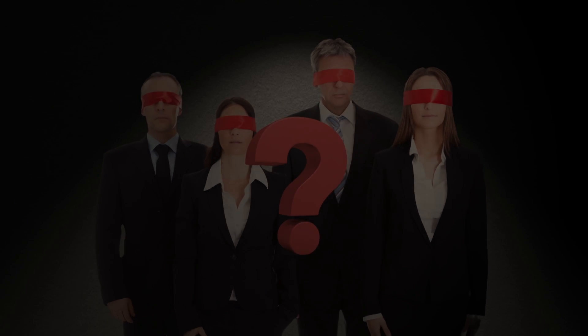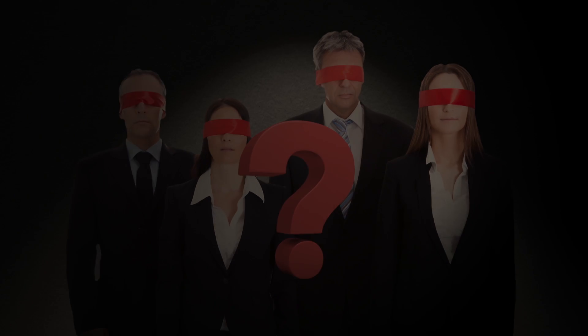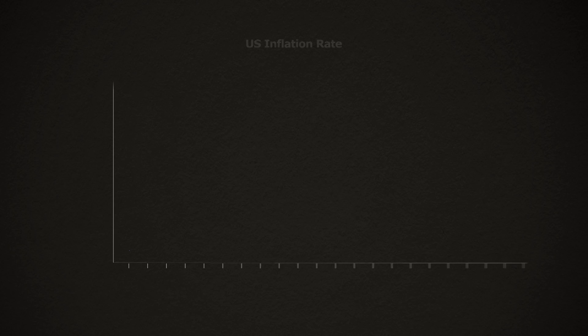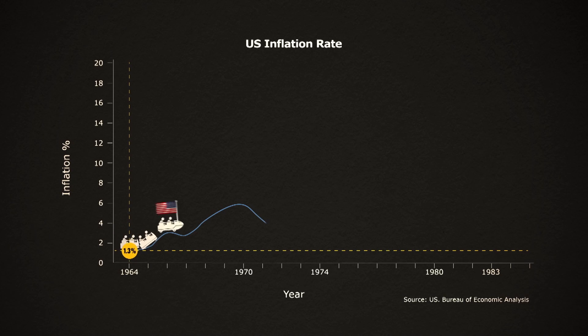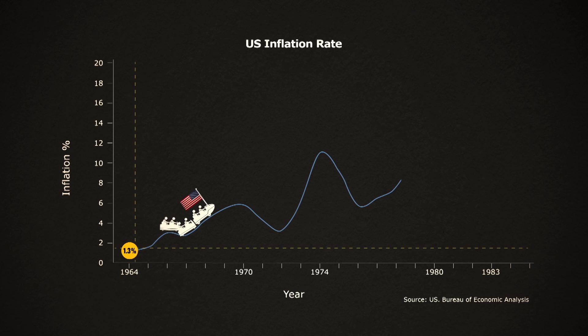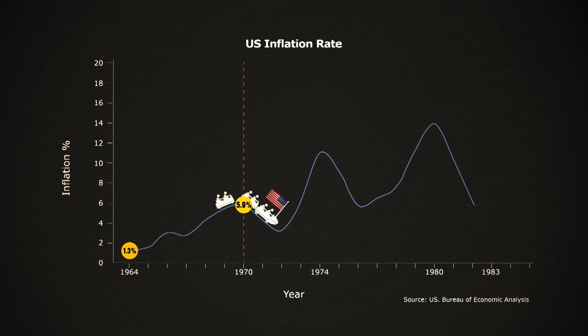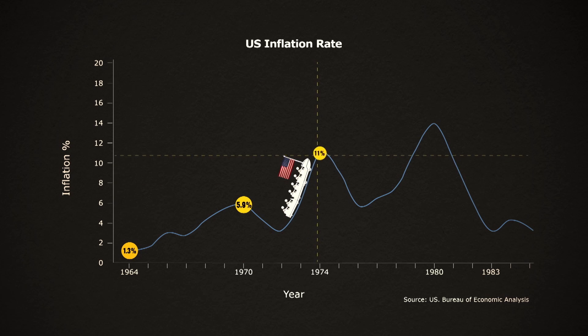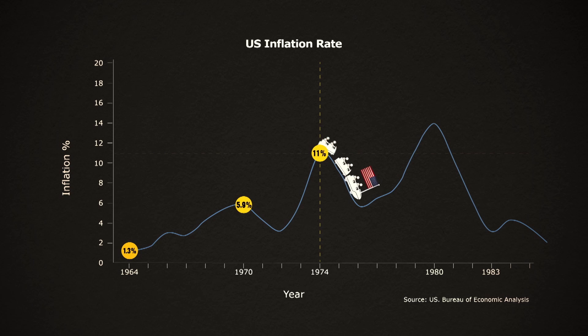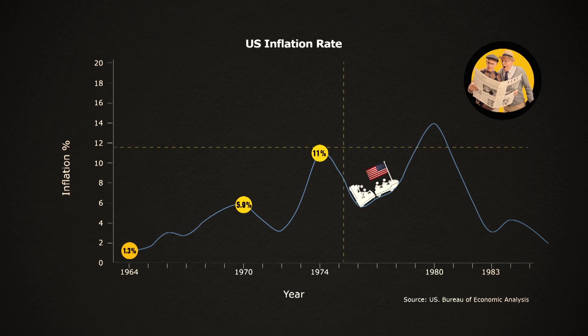If everyone knew that the inflation rate would be 2% or 8%, then everyone could prepare, and the exact rate wouldn't matter so much. But it's often the case that no one knows what the inflation rate is going to be. In the United States, the inflation rate was 1.3% in 1964, then quadrupled to 5.9% in 1970, and then went to 11% in 1974. Inflation caught people by surprise.